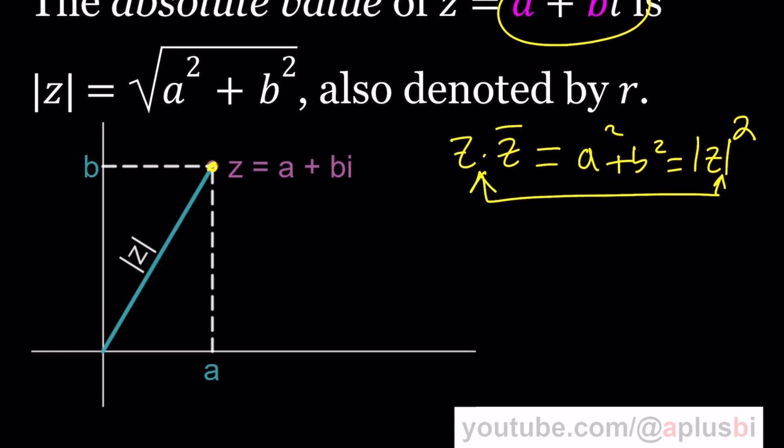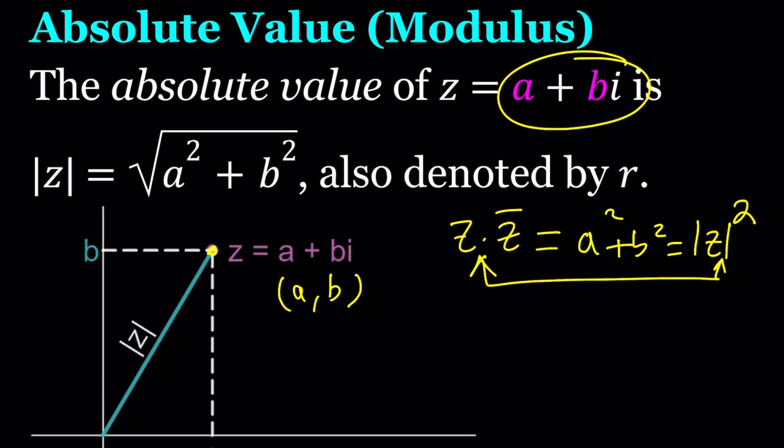The absolute value comes from a definition. It is the distance from the origin to the number that represents our complex number. Our complex number a plus bi is basically the same thing as the ordered pair a comma b. This is the first quadrant but our number can be in any quadrant depending on the value of a and b. The result is always a non-negative real number.